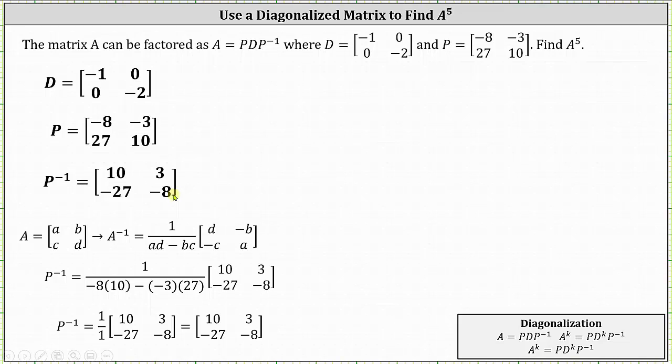So now that we know P inverse, we know matrix A is equal to P times D times P inverse. We're not actually asked to find matrix A, but I did want to show that matrix A is the matrix negative 82, negative 24, 270, 79.